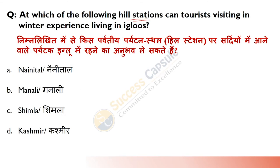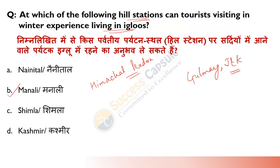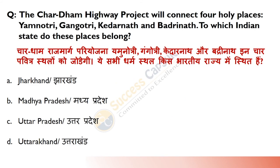At which of the following hill stations can tourists visiting in winter experience living in igloos? This concept was started in Manali, Himachal Pradesh. The igloo hotel — this experience first started there. Gulmarg in J&K also has igloos. The Char Dham project will connect four holy places — Yamunotri, Gangotri, Kedarnath and Badrinath — and the project started in December 2016.